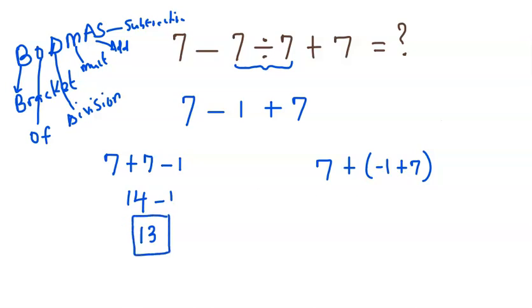Let us check here. We have 7 plus, now negative 1 plus 7 is 6, so we have 6. And from here, 7 plus 6 is 13. We can see with the two different ways we get the same answer.